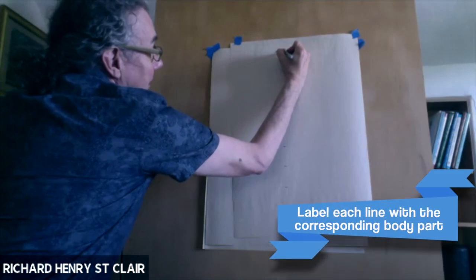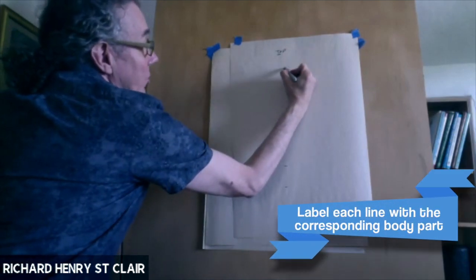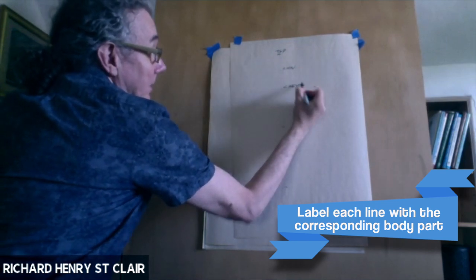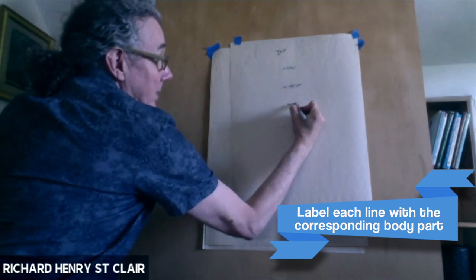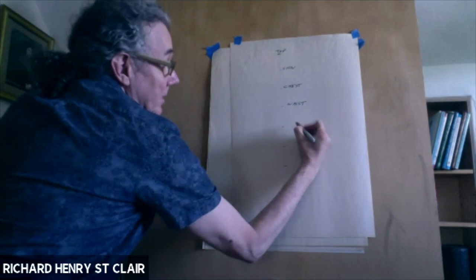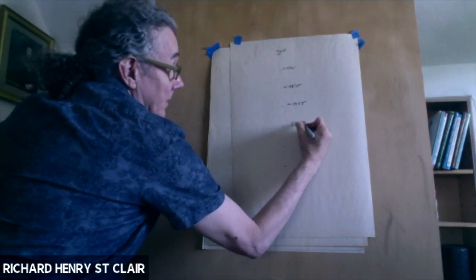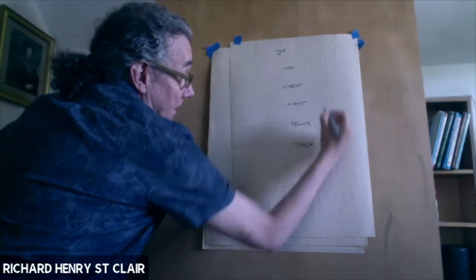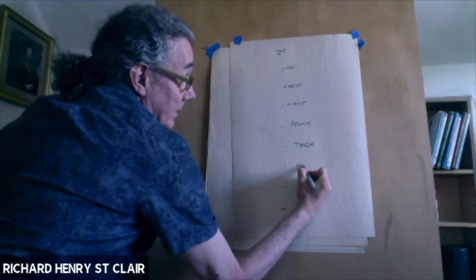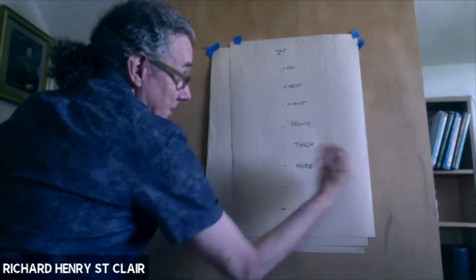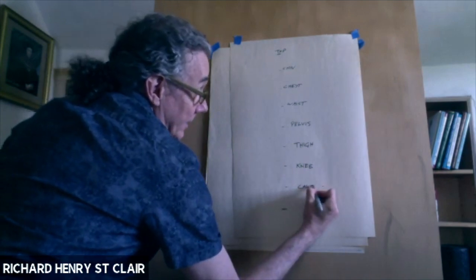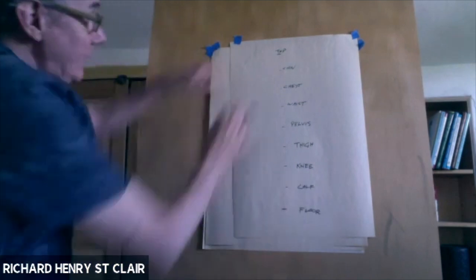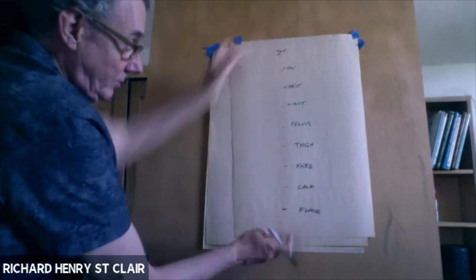So this is the top of the head, right? So this first mark is the chin. This next mark is the chest. This next mark is the waist. This next mark is the bottom of the pelvis. This next mark is the thigh. This next mark is your knee. This next mark is your calf. And the next mark is the floor. So that's my eight heads marked out on the page.